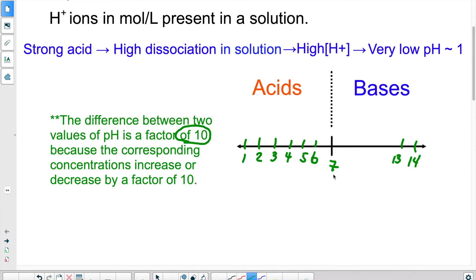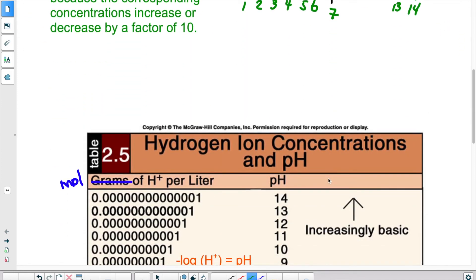And again, the neutral point is 7. If a solution has a pH of 7, it's neither acidic or basic. It's neutral.